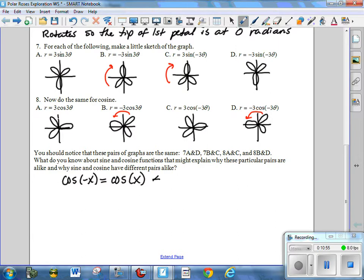However, for sine, sine is an odd function. So, this one is an even function. For an odd function, we have this relationship. Sine of negative x is equal to negative sine of x. So, that means, and that's an odd function. So, that means that negative 3 sine of 3 theta equals 3 sine of negative 3 theta. So, those two should be the same.